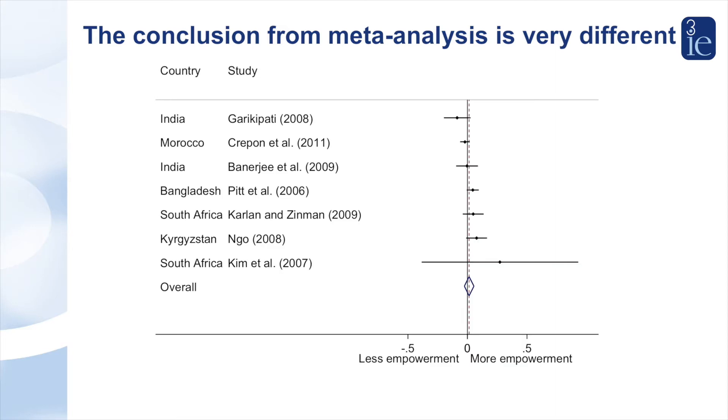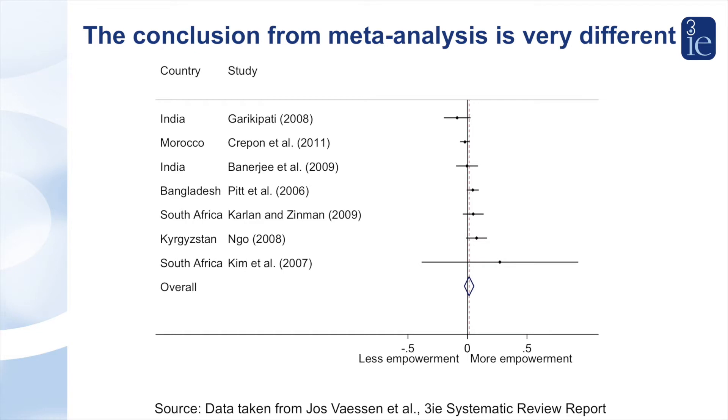On the other hand, meta-analysis — the statistical appraisal and pooling of evidence from multiple studies — gives a clear answer: microcredit alone does not empower women. All studies in Juss Weissen's meta-analysis measure empowerment as women's control over household spending decisions. In the forest plot on your screen you'll see the meta-analysis for this outcome. Each individual study is shown vertically together with its effect size and confidence interval. The effect size measures the standardised change in outcome for women in microcredit groups compared to the same outcome for women not in microcredit groups, and the vertical line shows the point at which there is no change in the outcome.